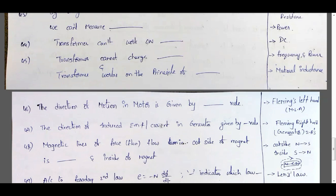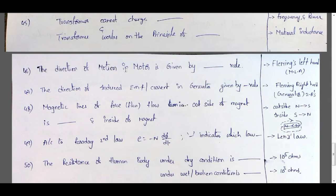The direction of motion in a motor is given by Fleming's left hand rule — remember as MLA (Motor Left-hand rule A). The thumb gives the direction of motion. The direction of induced EMF or current in a generator is given by Fleming's right hand rule — remember that generator has two R's. The middle finger of the right hand gives the induced EMF or current direction.